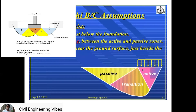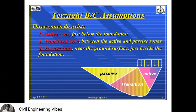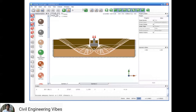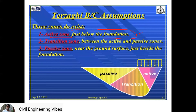As per Terzaghi's theory, three zones exist. Zone 1, known as the active zone, is just below the foundation. The soil in this zone behaves elastically, as if it is a part of the foundation itself. Zone 2, known as the transition zone, lies between the active and passive zones. At this stage, the load effect on the active zone and neighboring soil forms a region called the arc of logarithmic spiral.